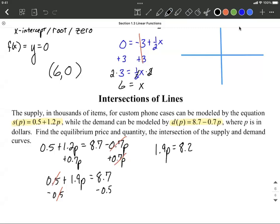Now to get p all by itself, we need to get rid of the 1.9. We're going to divide both sides by 1.9. This should give us p is, well, my calculator says 4.315789.